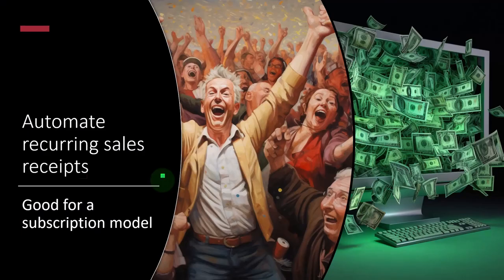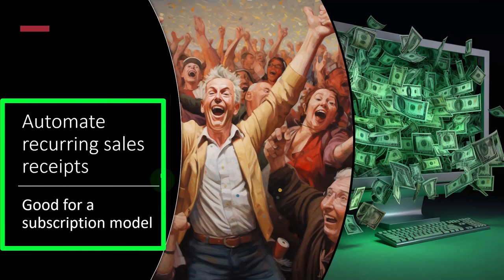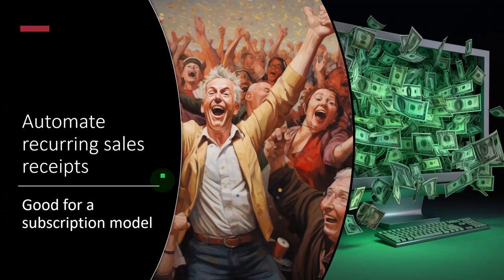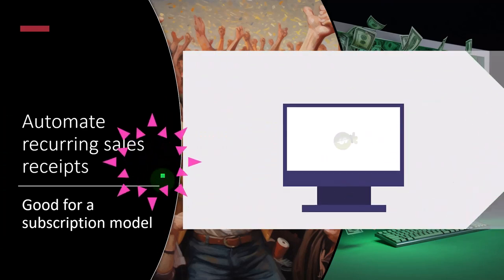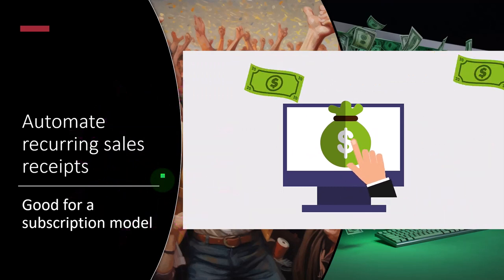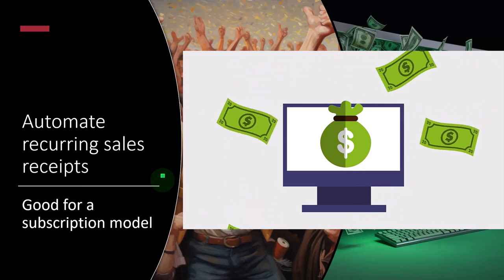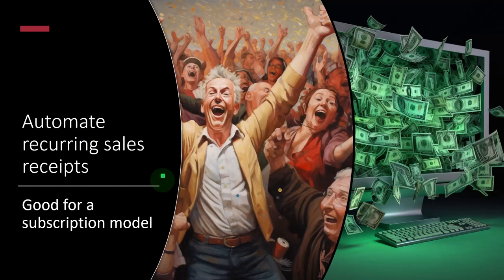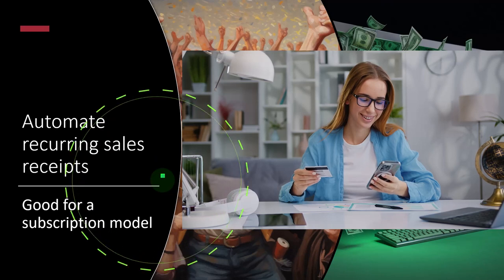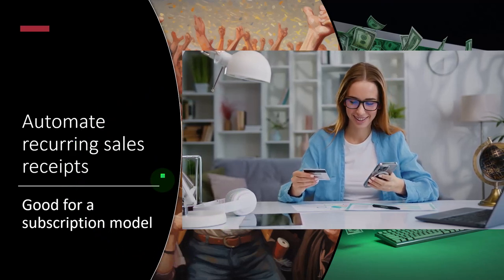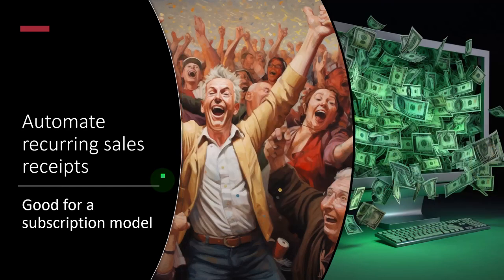Next is automating recurring sales receipts. If you have a subscription model where you bill customers every month, you could schedule invoices, but ideally you'd get the customer's agreement to set up an automatic payment — avoiding the invoicing and accounts receivable process entirely. You can automate a model for automatic payments, which is a great system for subscription-based businesses so you don't have to go through the billing process every month.